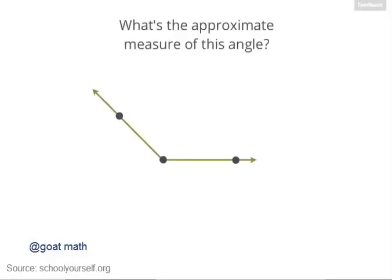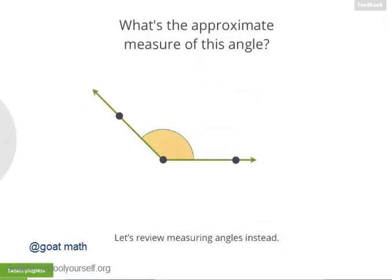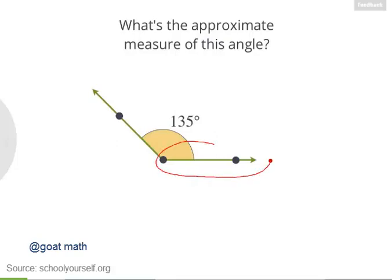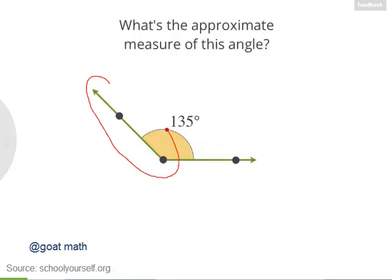To get started, what's the approximate measure of this angle? So this angle measures approximately 135 degrees. One way to think about it is you need to rotate this ray 135 degrees so it lies on top of the other ray.